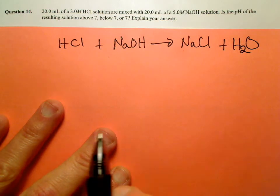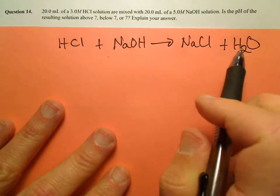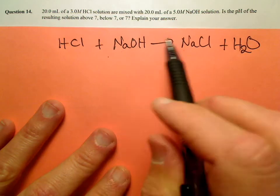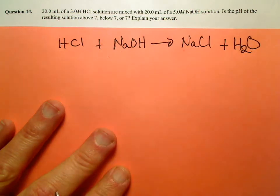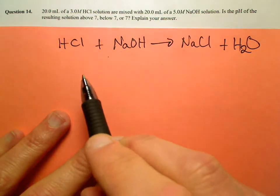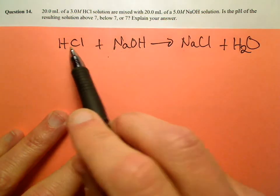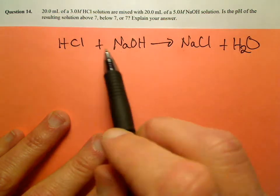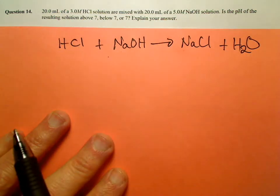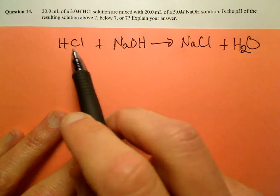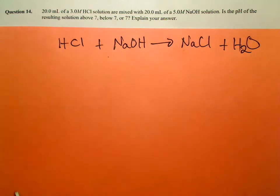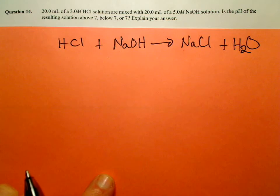This is all balanced: two hydrogens, a chlorine, and a sodium on each side. So it's balanced. What this means is that the mole-to-mole ratio between HCl and sodium hydroxide is one-to-one. For every mole of HCl, you're going to react with a mole of sodium hydroxide. So let's look at this in light of the idea of limiting reactant.